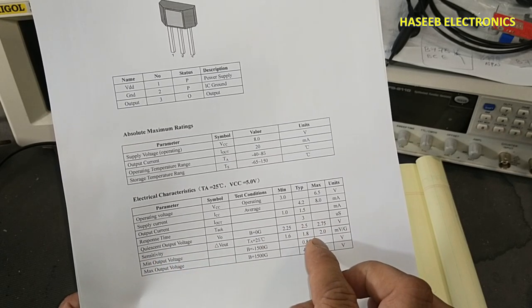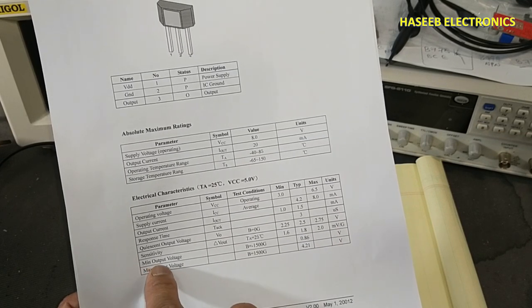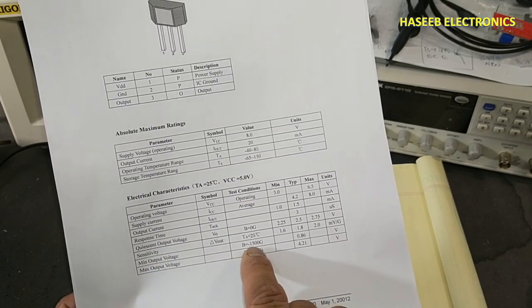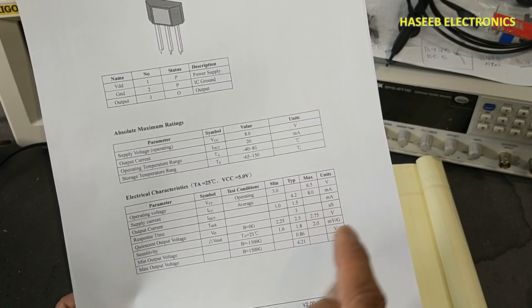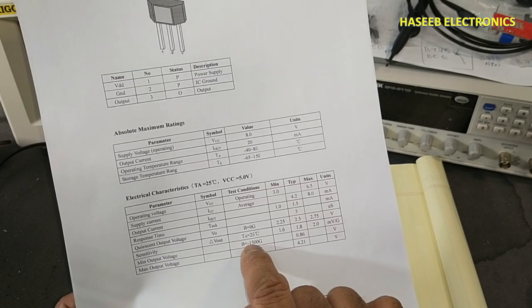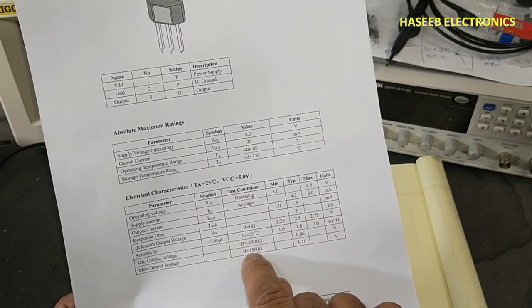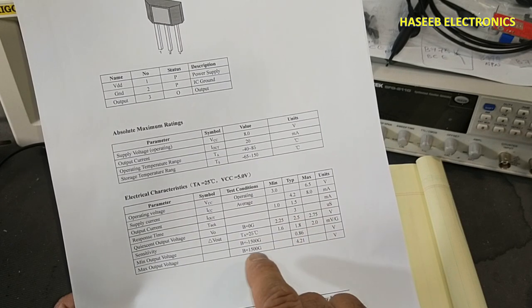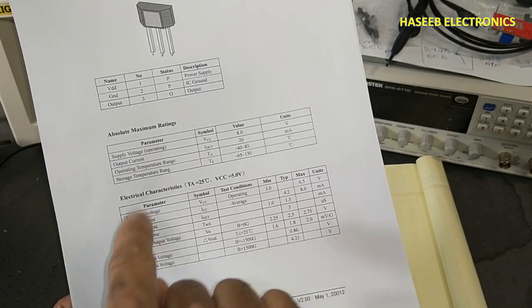Sensitivity 1.8 millivolt per gauss. Minimum output voltage at minus 1500 gauss, that is 0.86 volt. This is minus 1500 gauss. And maximum output at positive gauss 4.21 volt. It is the north and south pole.